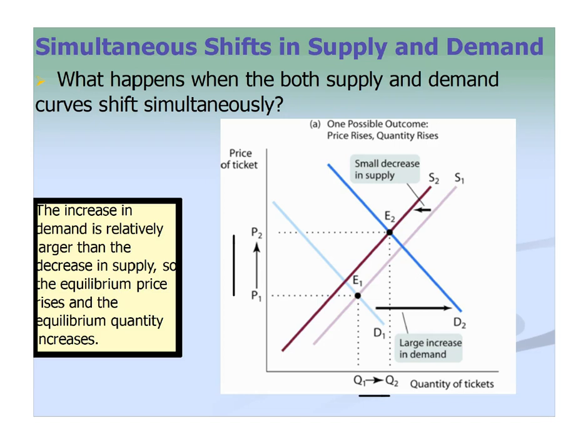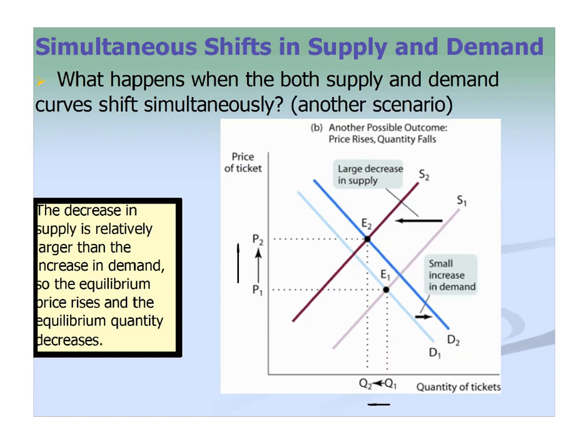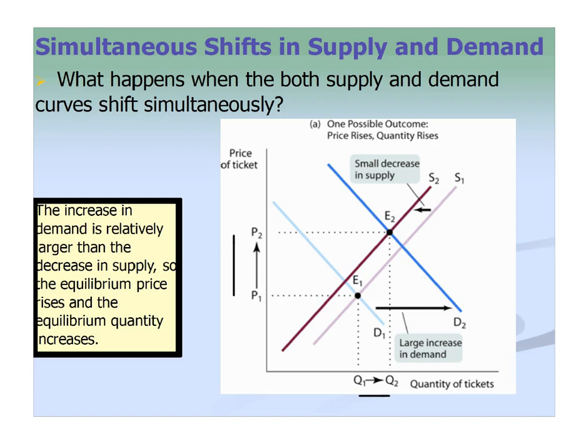If you need key graphs five through nine, definitely go back to the first video. This video is covering the simultaneous shifts. So let's take a closer look. In this case, we have a supply curve shifting leftward — supply is falling — but demand is increasing. So maybe it's a technological problem, but demand is through the roof for this product.